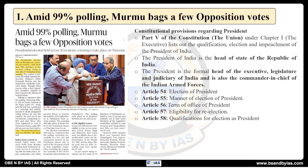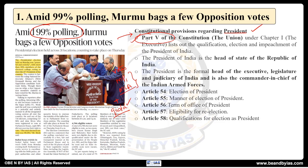The presidential elections have taken place in which 99 percent of the polling has happened. The polling details are not as relevant for us, but what is relevant are the constitutional provisions regarding the president and the electoral college. The president is part of the Union Executive, which comes in the fifth part of the constitution, and he is the head of the Republic of India. We follow a parliamentary form of government, which means he is a nominal head.